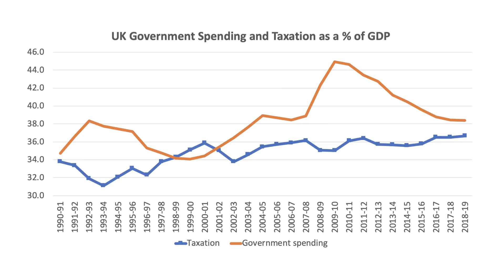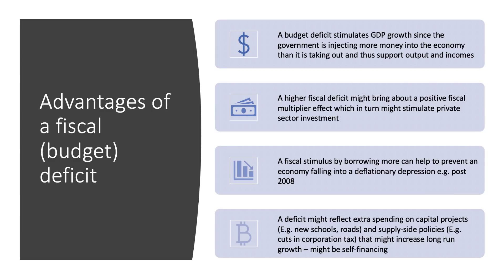When the orange line is above the blue line there was a budget deficit. Most of the reduction in the deficit since 2011 has been caused by a fall in the share of government spending as a percentage of GDP, but there's also been a modest increase in the tax burden — the gap is getting smaller, hence the budget deficit is narrowing.